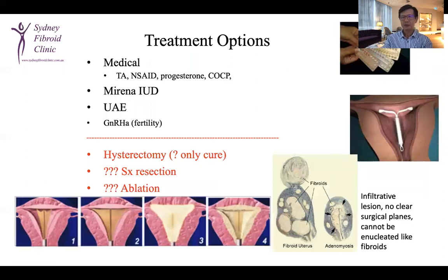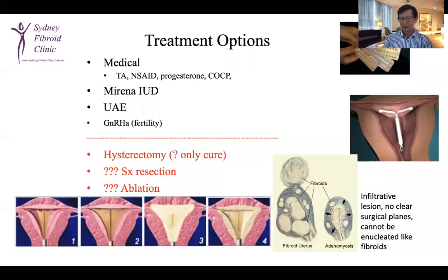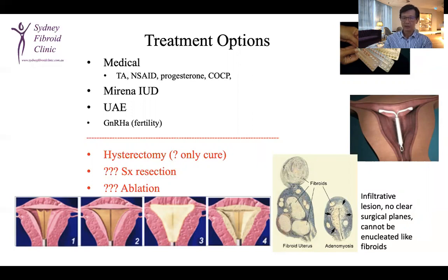In terms of treatment options, I want to walk through the surgical options first. Is adenomyosis resectable? The short answer is no. It is an infiltrative lesion — there are no clear surgical planes. Unlike fibroids, which can be enucleated, it is quite difficult to resect adenomyosis. You either under-resect or over-resect. In my opinion, adenomyosis is not a surgical lesion.